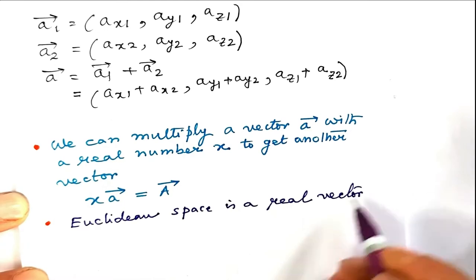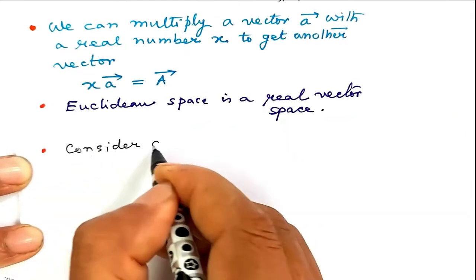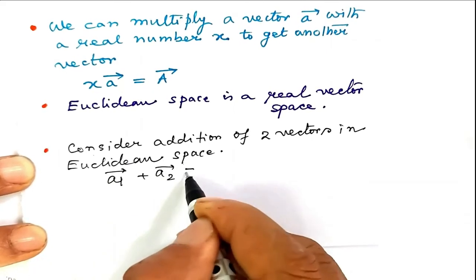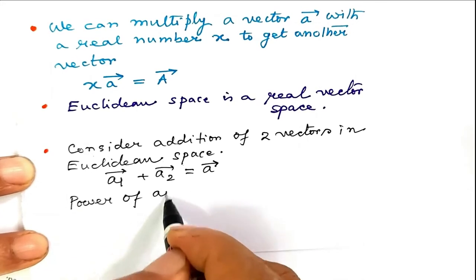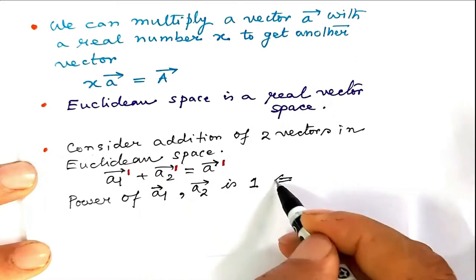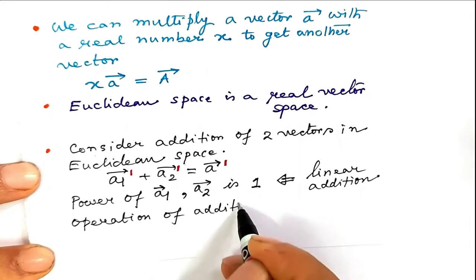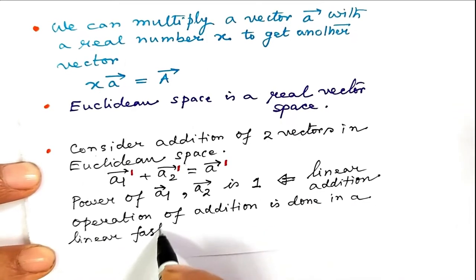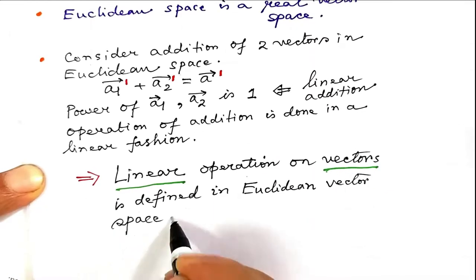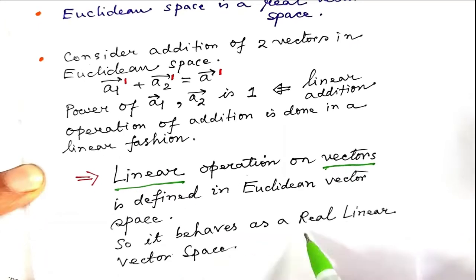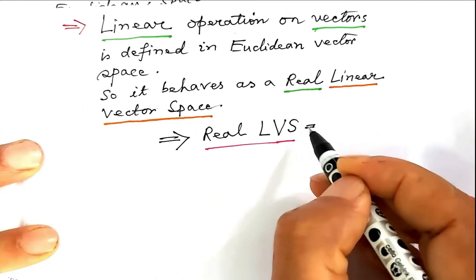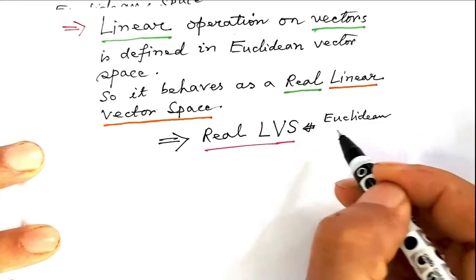Euclidean space is a real vector space. Addition of two vectors in Euclidean space is a linear operation. Linear operations on vectors are defined in Euclidean vector space, so it behaves as a real linear vector space, abbreviated as real LVS. Thus, Euclidean space is a real linear vector space.